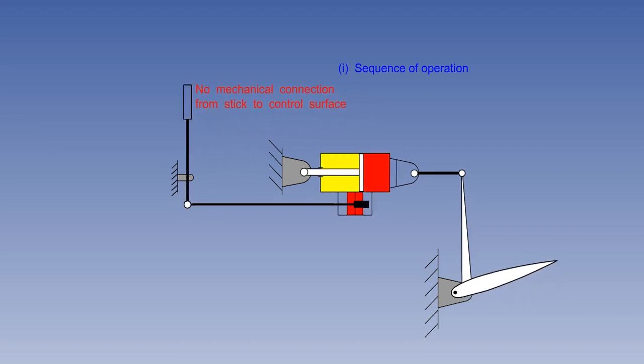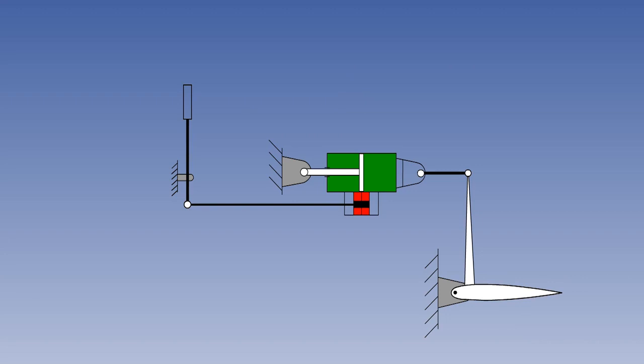The body of the PFCU will move the control surface until the body reaches the position of the servo valve and then it will stop. The fluid in the PFCU is now trapped, giving a hydraulic lock that prevents any movement of the control surface by the airflow.